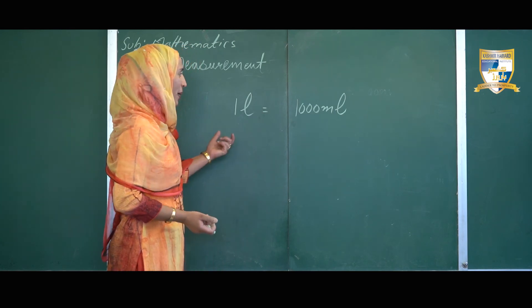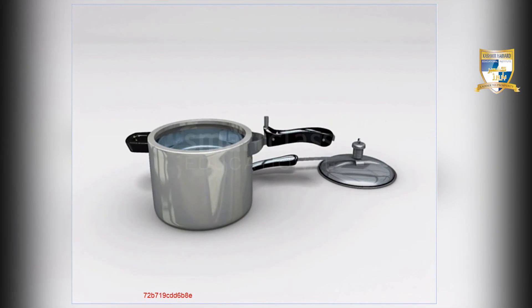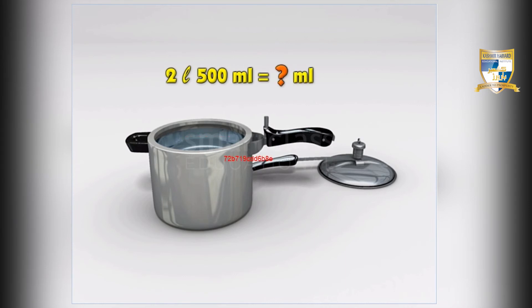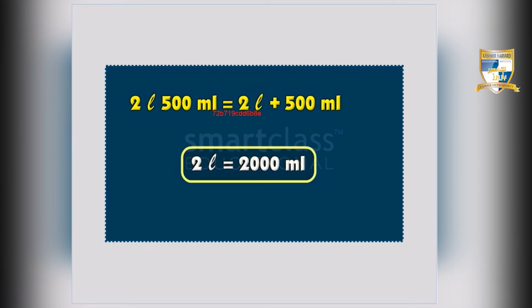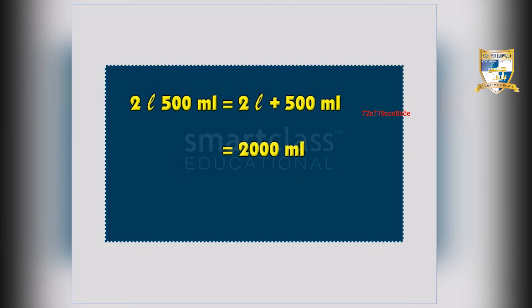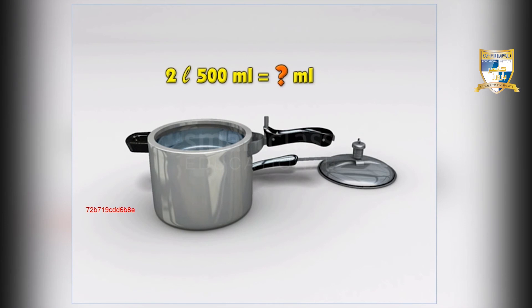To understand the conversion of the units of capacity, let us have a look at this example. The volume of water in the pressure cooker is 2 litres and 500 millilitres. What is its volume in millilitres? First, split 2 litres 500 millilitres into 2 litres plus 500 millilitres. 2 litres equals 2000 millilitres. Add 2000 millilitres and 500 millilitres, and you get 2500 millilitres. So the volume of water in the pressure cooker in millilitres is 2500 millilitres.